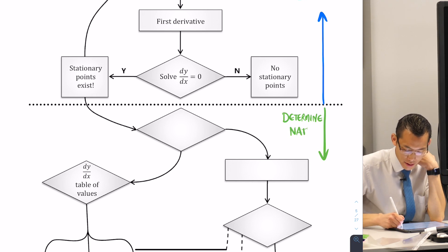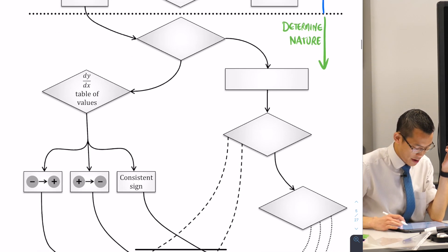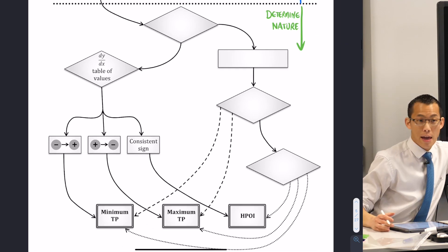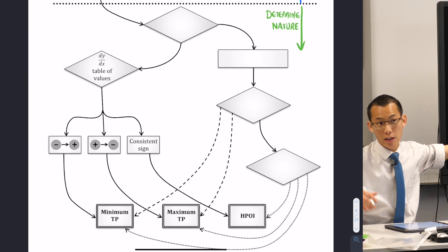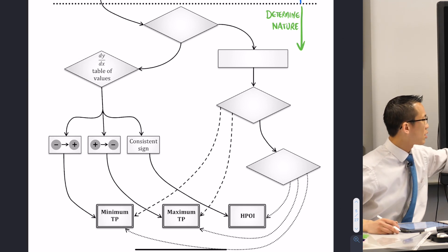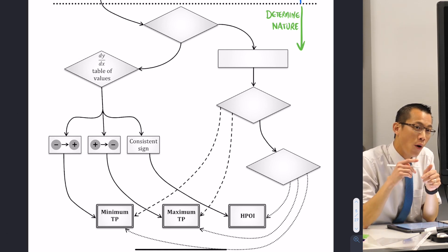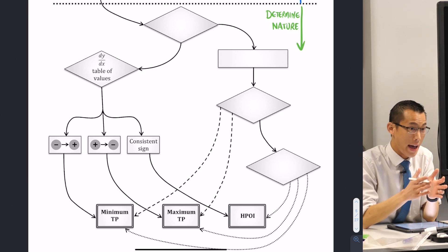Last week, we basically said, just do some more stuff with that first derivative. Importantly, like look at a table of values over here. Look at whether you're increasing and decreasing or vice versa. And then that'll tell you whether it's a minimum or a maximum or a horizontal point of inflection. But now we know that there's another way.